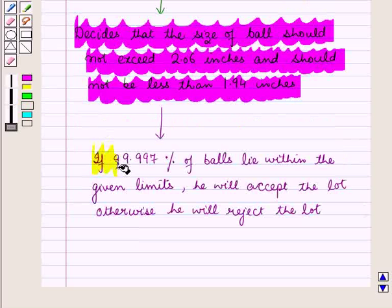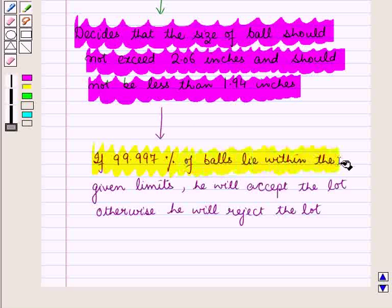If 99.997% of balls lie within the given limits, he will accept the lot, otherwise he will reject the lot.